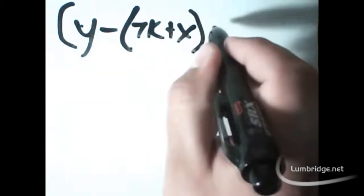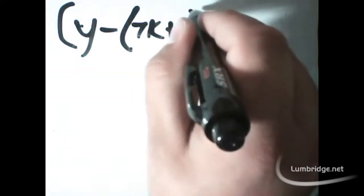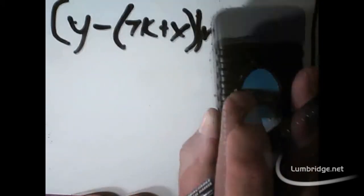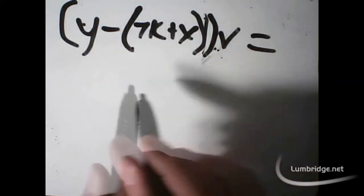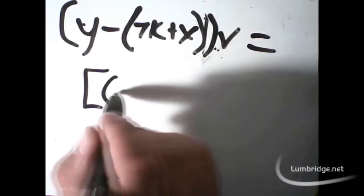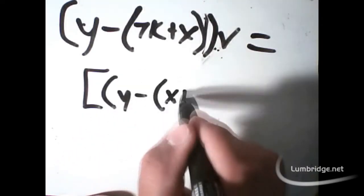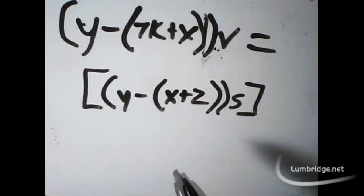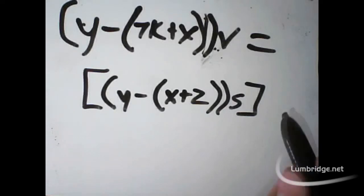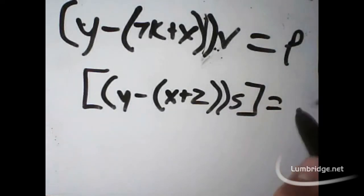And what this ends up being is one giant equation. It's not x, y, z. This one is y minus (7k plus x) times v. We're going to have to put another parentheses in here. Another parentheses times v equals the absolute value of y minus (x plus z) times s.